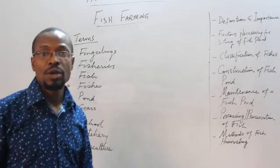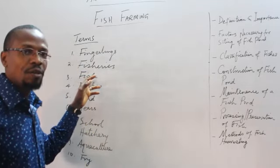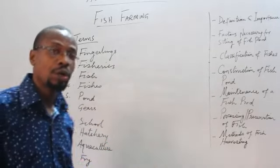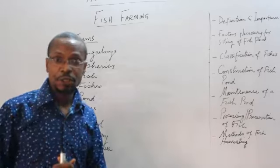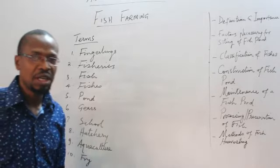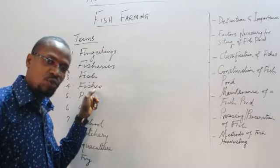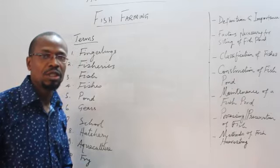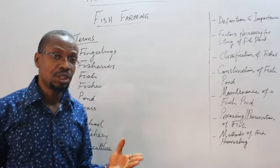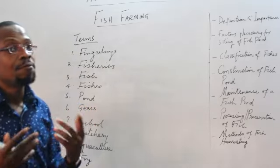When you consider fish as a species — a single, singular species — irrespective of the number, whether there are a hundred or a thousand, as long as it is the same species, you don't say 'fishes,' you say 'fish.' You say 'fishes' when you are considering different species. For instance, if we're talking about tilapia and also titus, you can say fishes. But if you're considering just tilapia, even if it's a thousand of them, you only say fish.